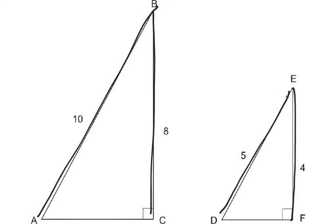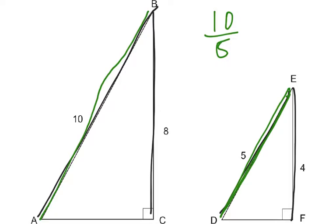So corresponding sides. We have AB, which is 10, and we have DE, which is 5. Then we have BC, which is 8, and EF, which is 4.